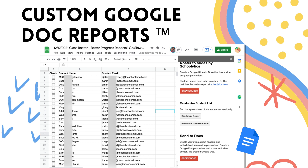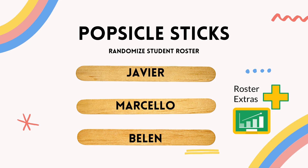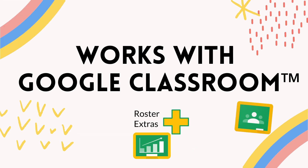Roster Extras by Schoolitics takes your roster and lets you do more. It's also going to allow you to do Popsicle Sticks — it'll randomize your student roster so you can randomly call on students. As you check off student names, you have the option to not recall them again, so you can do it with or without replacement. Randomize the student roster, send it to Google Slides or Google Docs — it works with Google Classroom and takes your roster to the next level.